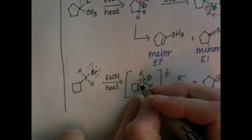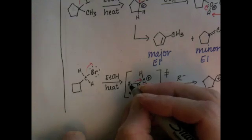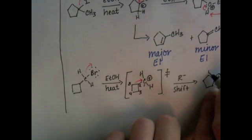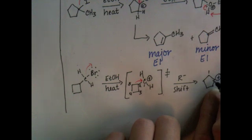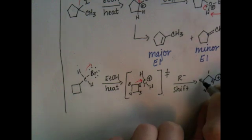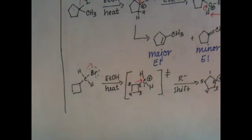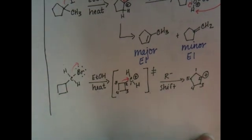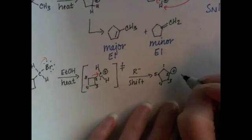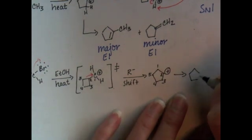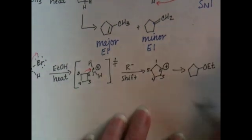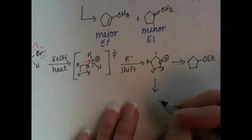Big ring. If this is carbon number one, this is number two, this is number three, this is number four, this is number five, you end up with probably that would be one, two, three, four, five. Five-membered ring. And that can go on to do substitution or elimination.